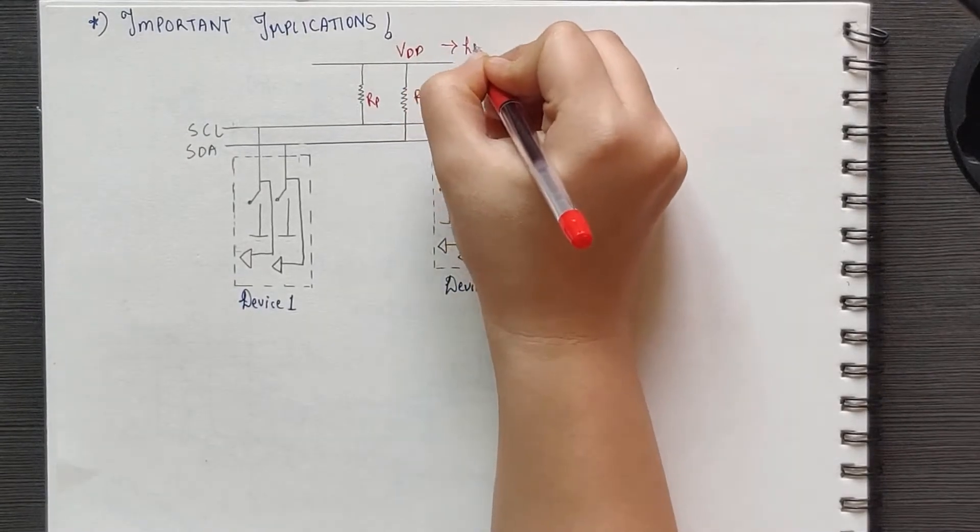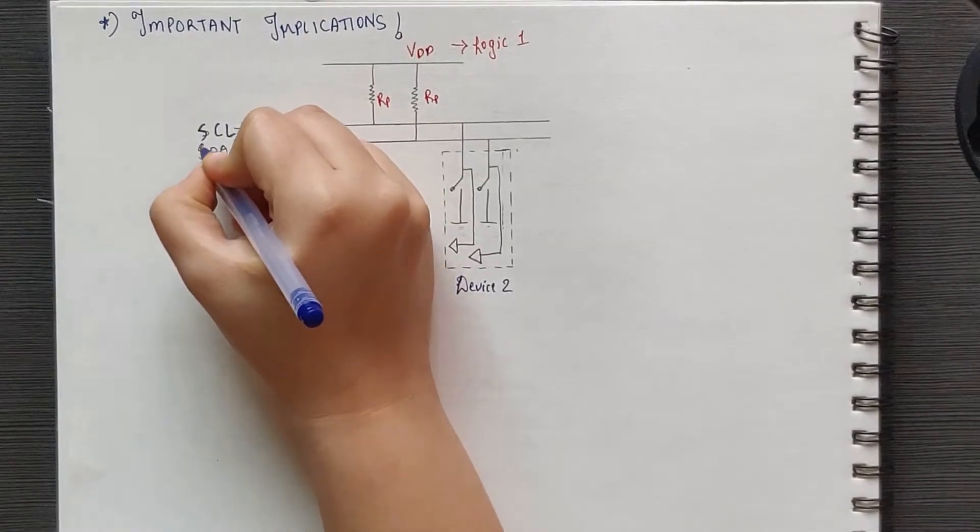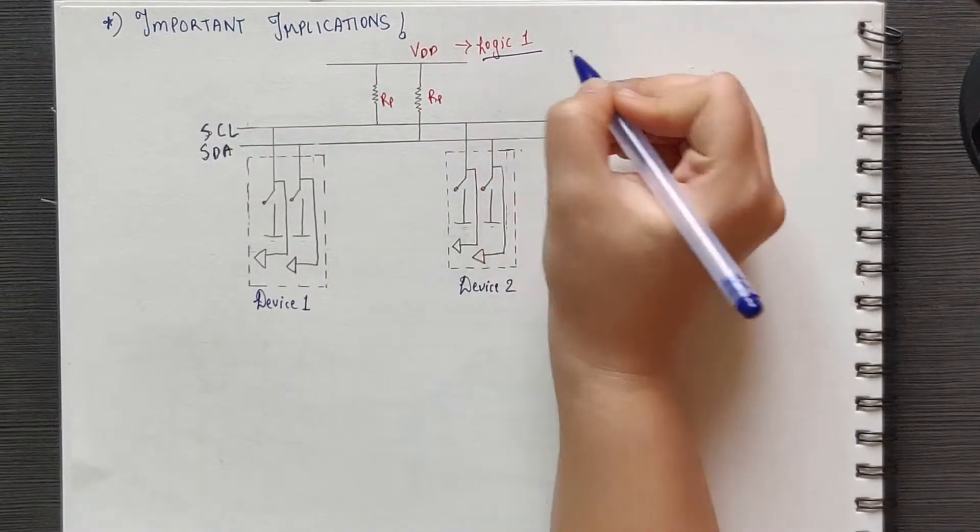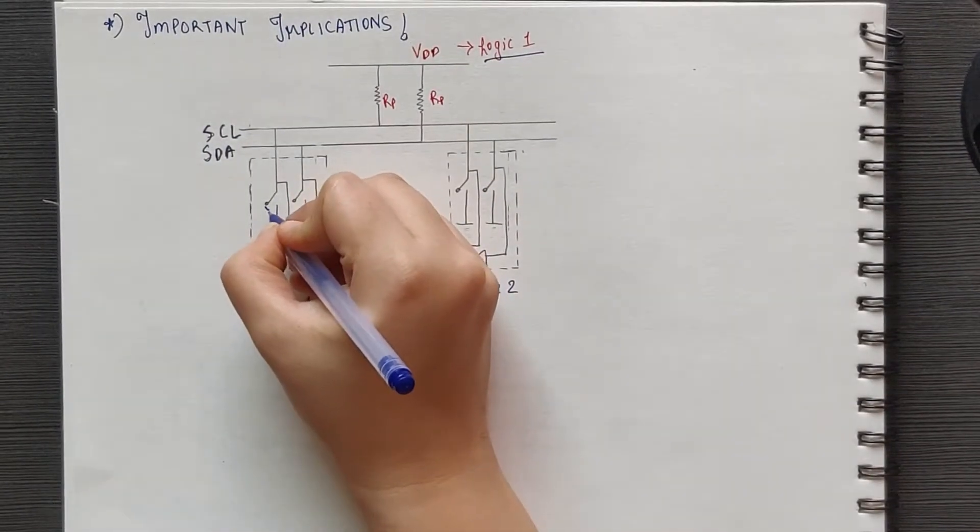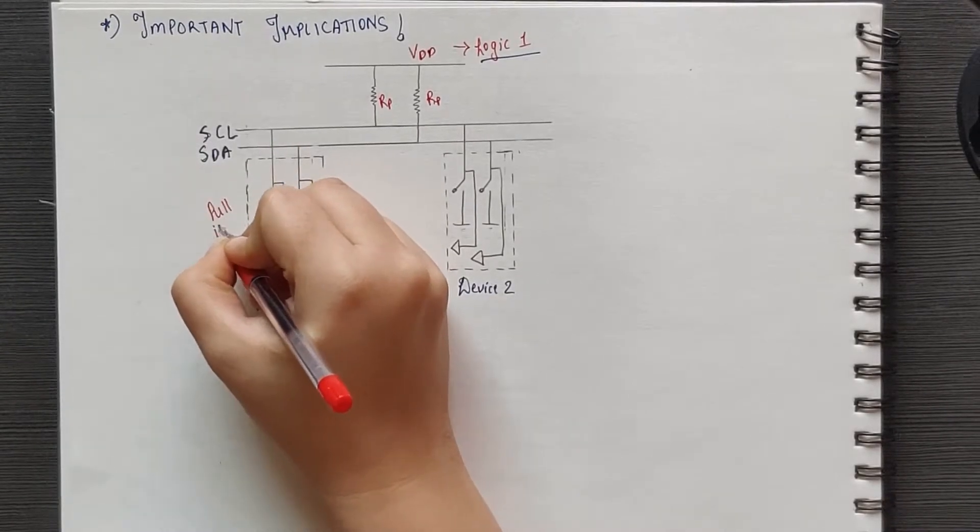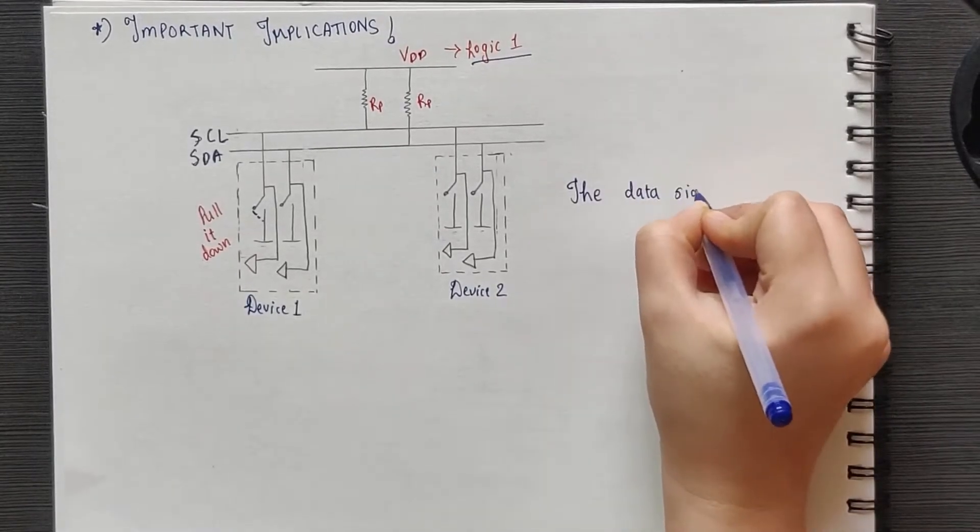The devices can determine if the bus is available for new transmissions by observing if both the SDA and SCL are at logic high for a certain amount of time. The devices can only pull the bus low.